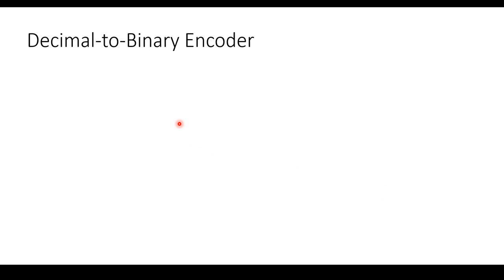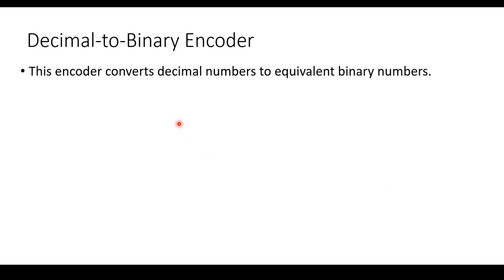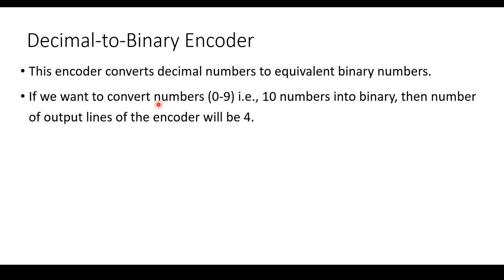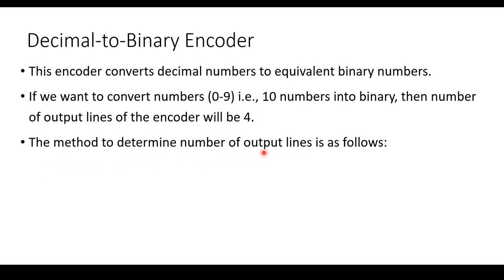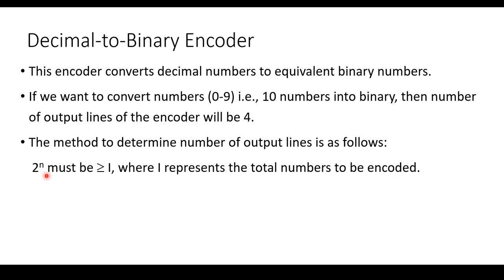Now we are going to see the decimal to binary encoder. This encoder converts decimal numbers to their equivalent binary numbers. If you want to convert numbers 0 to 9 — that is 10 numbers — into binary, then the number of output lines for the encoder will be 4. The method to determine the number of output lines uses the formula: 2 to the power n must be greater than or equal to i, where i represents the total number to be encoded.